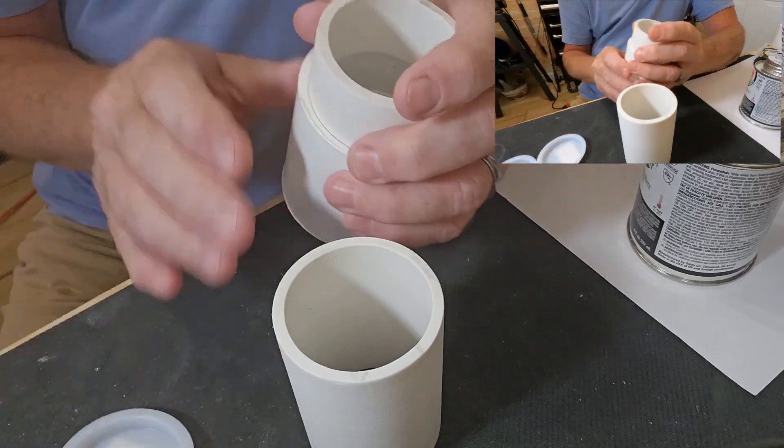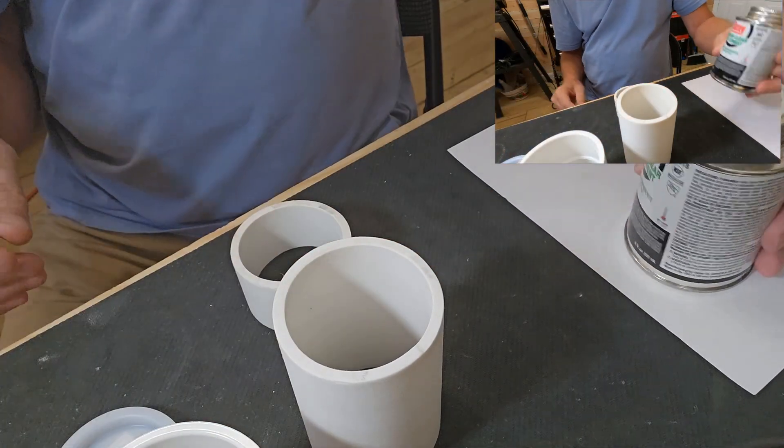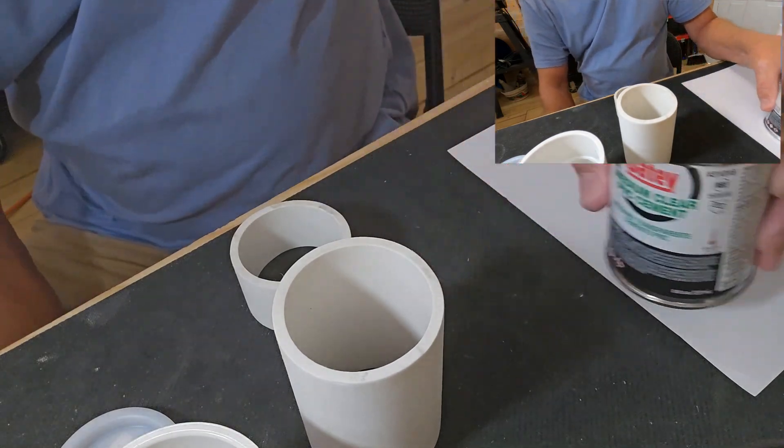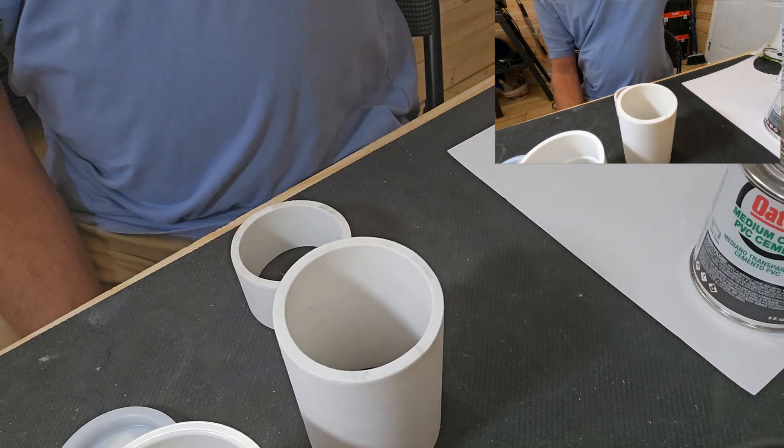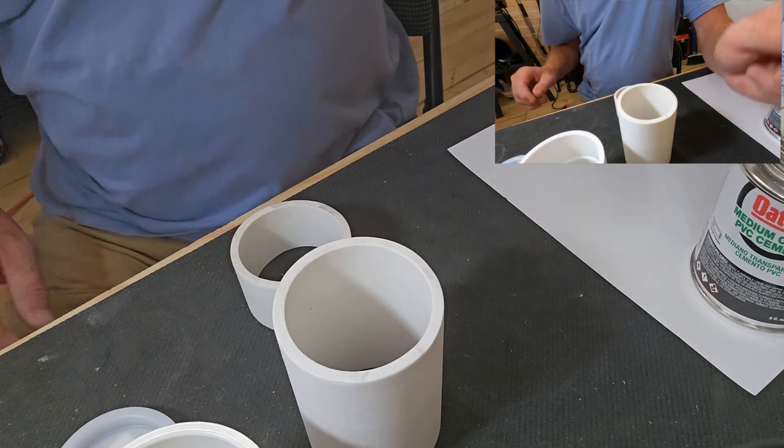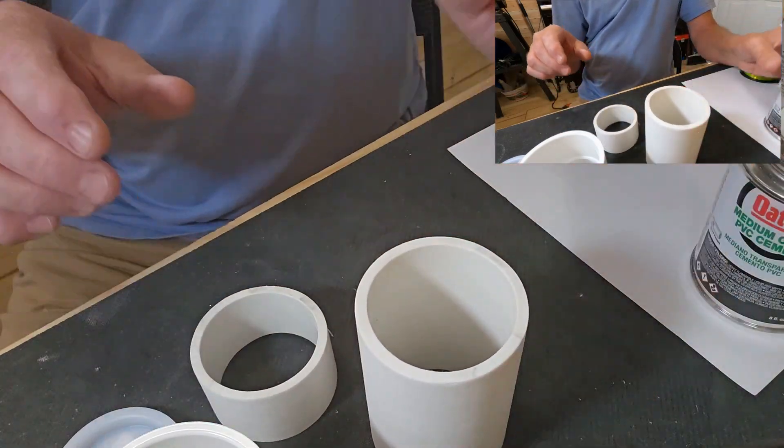I'm going to glue that end cap. I've got some of this PVC cement where I've been doing some plumbing work. You can use a glue I suppose if you want to. But anyway, let's go ahead and get started.